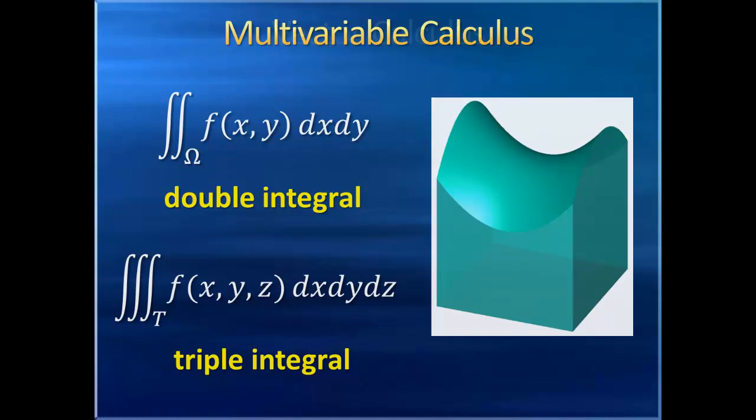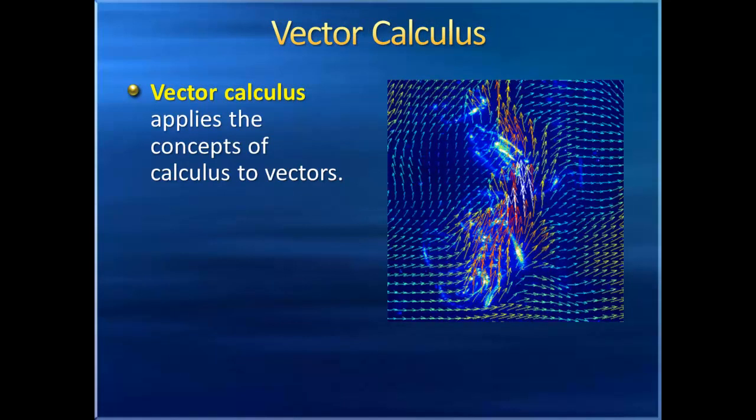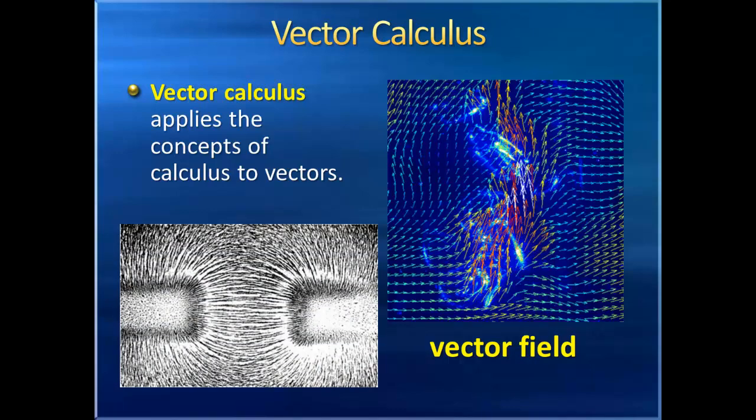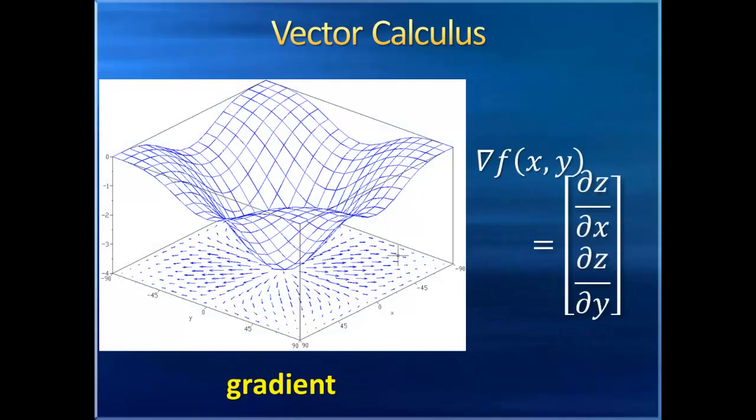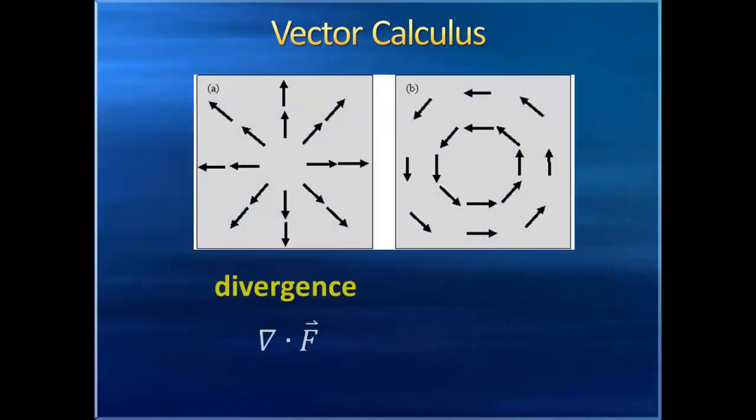Closely related to multivariable calculus is vector calculus, which, as you can probably guess, applies the concepts of calculus to vectors, and is essential to understanding fluid dynamics and electromagnetism. Vector calculus introduces the concept of a vector field, in which every point in a plane or in space has a vector associated with it. For instance, you may have seen field lines of a magnet describing the magnitude and direction of the magnetic force at any given point. The idea of the slope or the derivative is extended to become the gradient, which is a vector field built from partial derivatives. On a surface, the gradient always points in the direction of the steepest uphill of that surface.